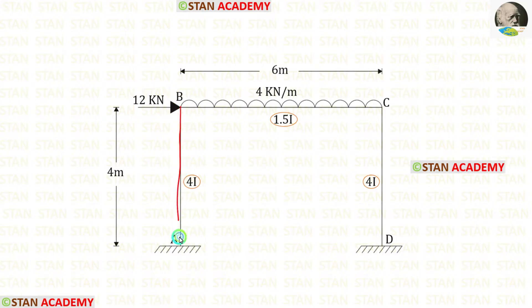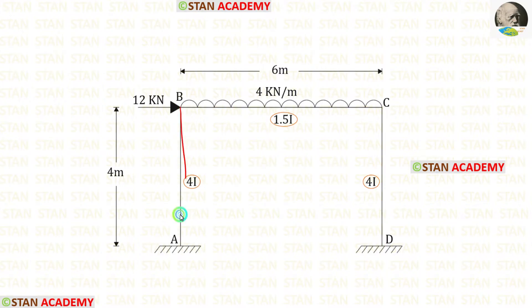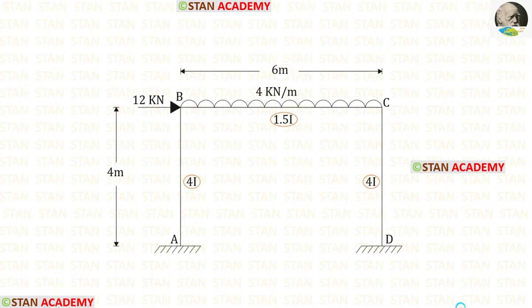For the columns the moment of inertia is 4I and for the beam it is 1.5I. The height of the columns is 4 meters. The length of the beam is 6 meters. This is a sway type frame.